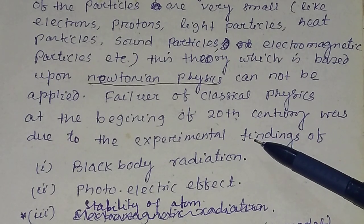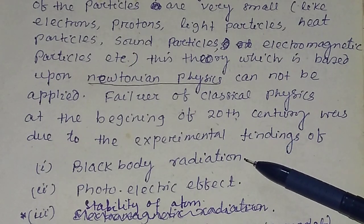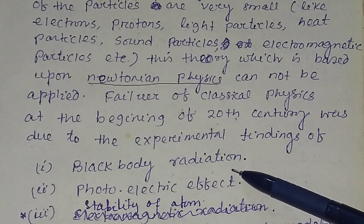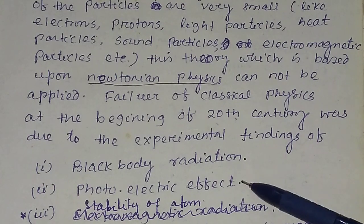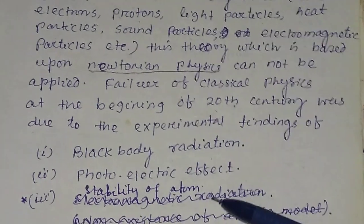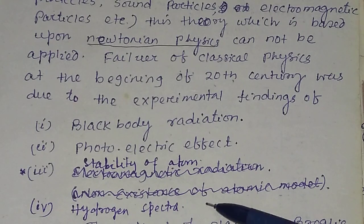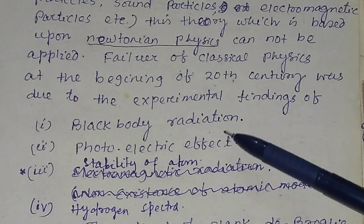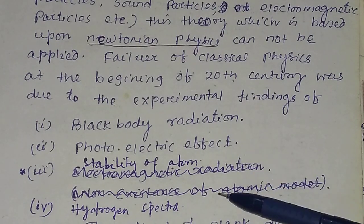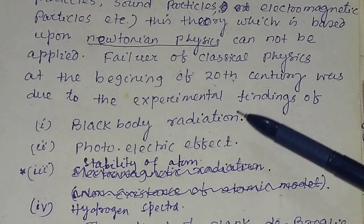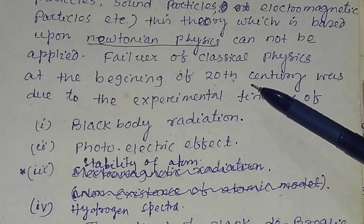There are some experiments whose experimental findings could not be explained by classical physics — specifically black body radiation, the photoelectric effect, and the spectrum of the hydrogen atom.